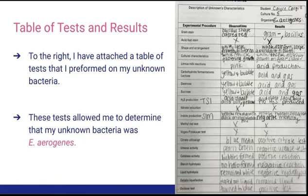Another test that I ran was a carbohydrate fermentation test. This microbe had both acid and gas production, seen through the yellow color of the broth and the bubbles that formed in my test tube. It fermented carbohydrates in the presence of lactose, dextrose, and sucrose. And so these were just a few of the tests that I ran.